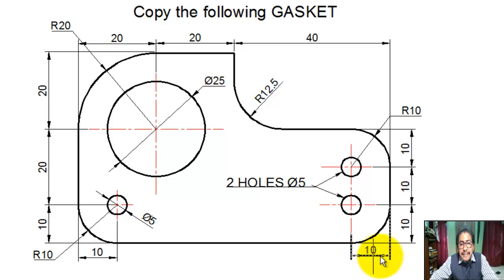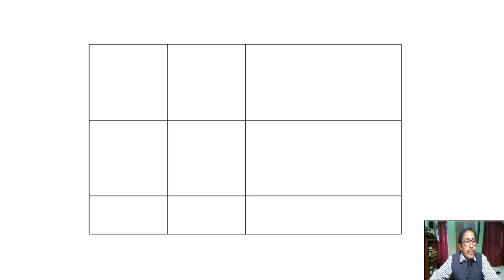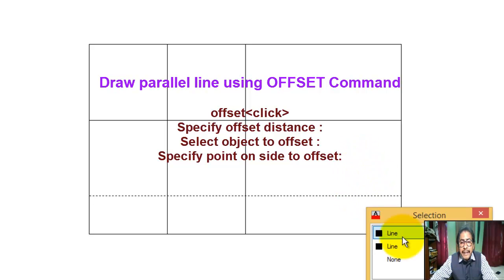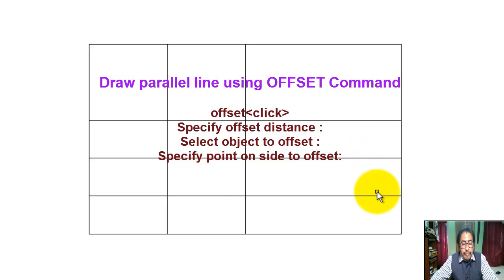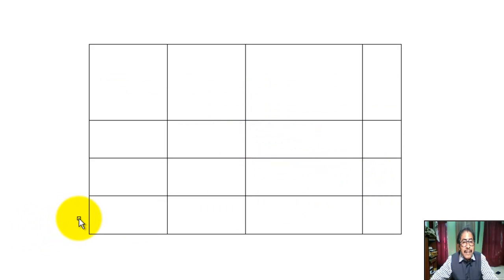Now these segments are 10, 10, 10, 10, 10, and 10. Again use the offset command, select object, specify direction. Again click on offset, specify distance 10. Again click on offset, specify distance 10.